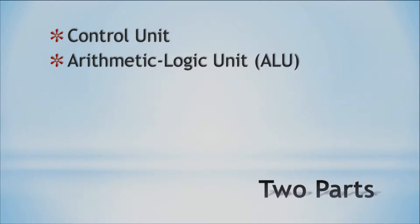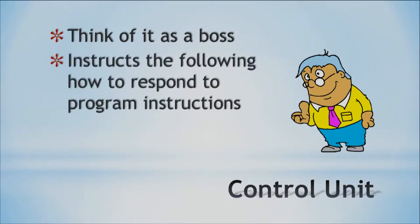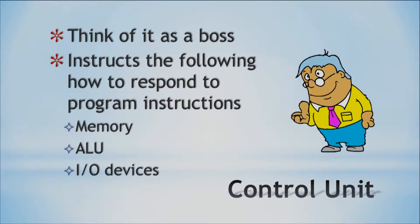The control unit is — think of it as the boss of the CPU, of the entire computer. What it does is it instructs your memory, the ALU, and IO devices on how to respond to program instructions. So a program will say go and do this, and the control unit takes that instruction from your program, interprets it, and sends it out to the required device to get that task completed. The control unit is like the boss because it's telling everyone what to do, how to do it, and when to do it — a very important part of your processor.